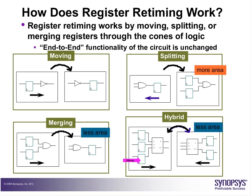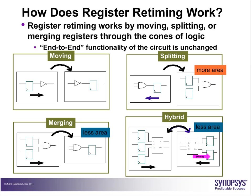By default, register retiming is disabled and you have to explicitly tell the compiler to retime. Please note that the end-to-end functionality of the circuit does not change — only area and timing are affected. If you are confused about why functionality does not change, note that pipelining or moving registers just corrects the sequencing of events, not the logic. For a full adder example, moving registers from inputs to outputs does not change the functionality of S and CO.